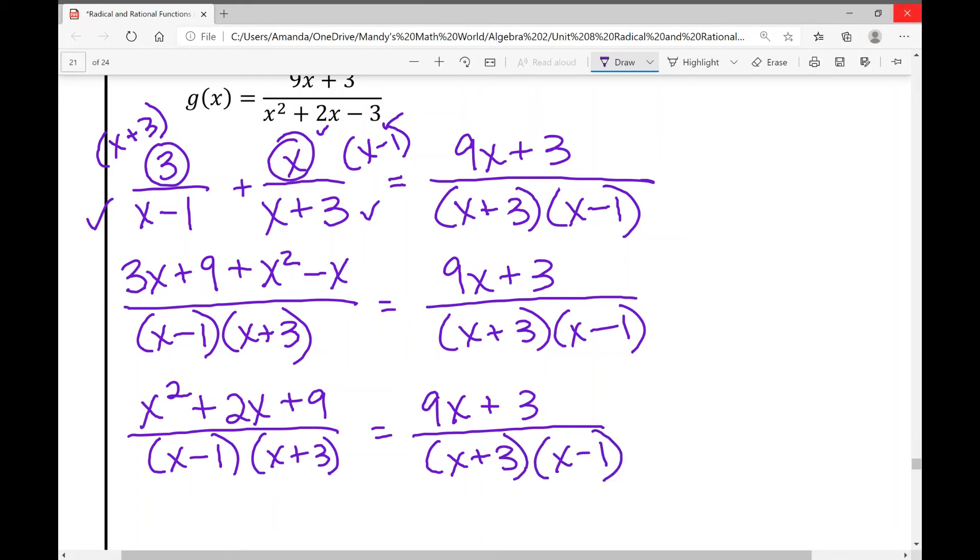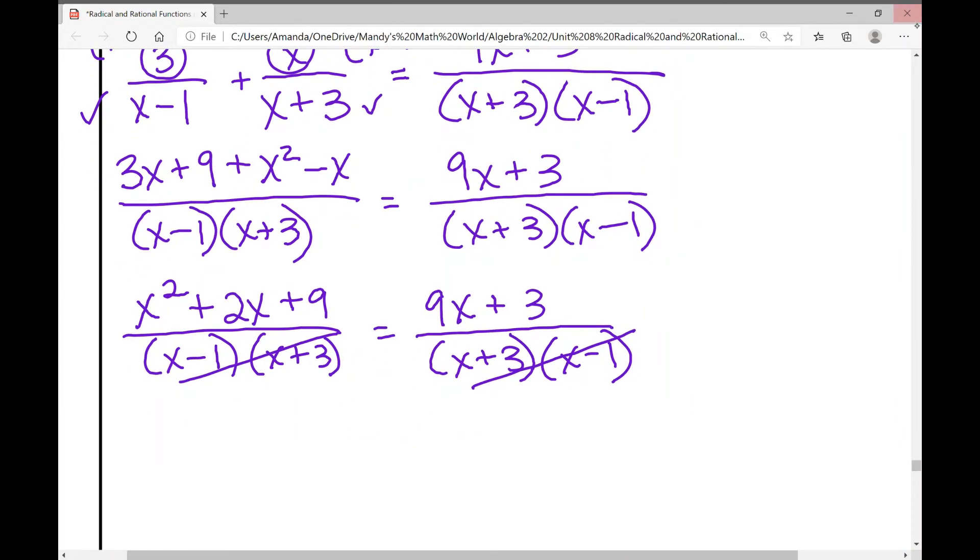over x minus 1 times x plus 3 equals 9x plus 3 over x plus 3 times x minus 1. You following me here? I know there's a lot going on. So at this point, we have two fractions on each side of the equal sign with the same denominator. That's what we've created. That's what you want. So we can eliminate those denominators and just set our numerators equal to each other.